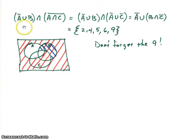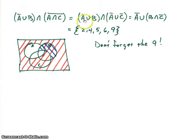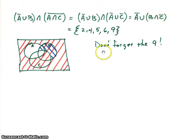For the last part, A-not union B intersected with (A intersect C)-not, I apply DeMorgan's Law to simplify (A intersect C)-not to A-not union C-not. Then, noticing A-not union appears in both parts, I pull it out to get A-not union (B intersect C-not). A-not is in red and B intersect C-not, which equals B minus C, is in blue. Unioning those — and don't forget element 9, which is outside all sets.